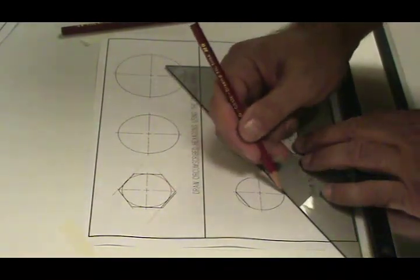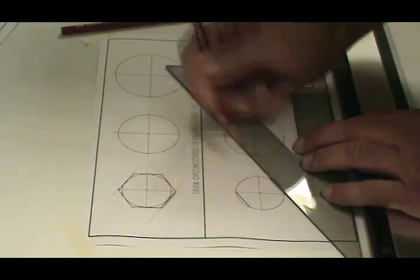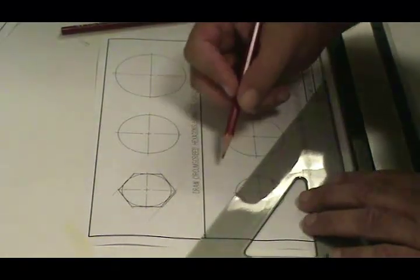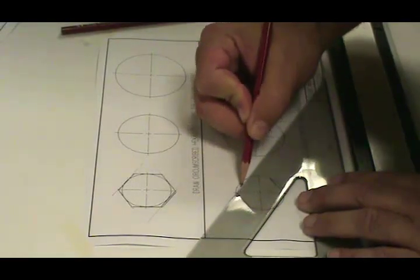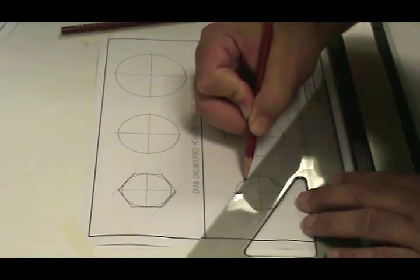I'm going to do the same thing from the bottom. Then I'm going to flip my triangle over and again line up with that intersection of the center line and the circle at the top.